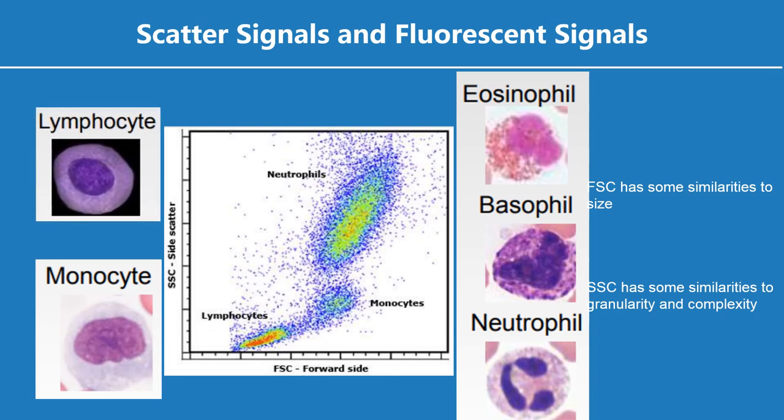Smaller lymphocytes and lymphoblasts produce a separate population with less FSC. They are not granular cells, so they also have low SSC. Therefore, these cells can be separated into different populations based on their FSC and SSC alone.